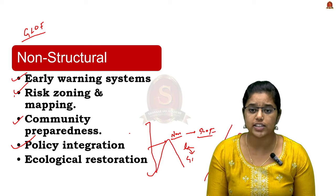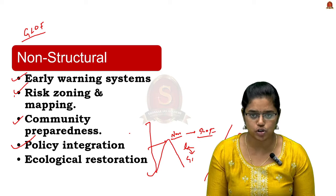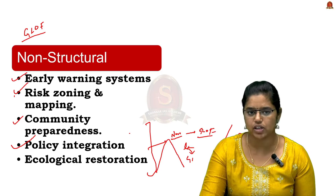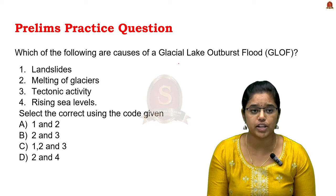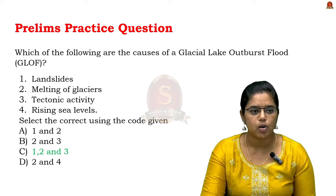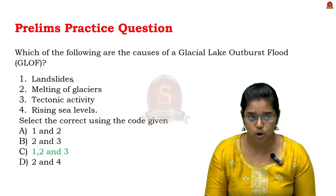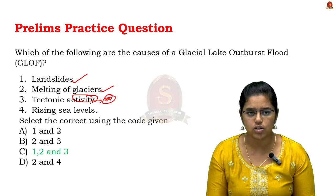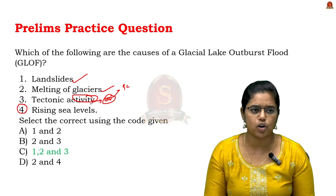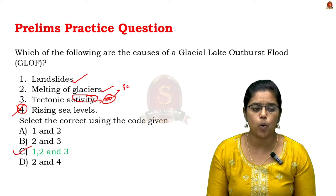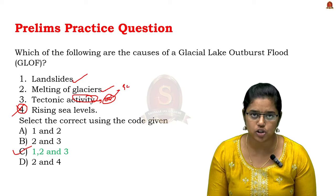In this discussion we covered glacial lakes, types of glacial lakes, GLOF, and mitigative measures. A prelims practice question: 'Which of the following are causes of GLOF? (1) Landslide, (2) Melting of glaciers, (3) Tectonic activity, (4) Rising sea levels.' The answer is 1, 2, and 3 — landslides, melting glaciers, and earthquakes (tectonic activity) can all cause GLOF, but rising sea levels cannot lead to glacial lake outburst floods. The correct answer is option C.